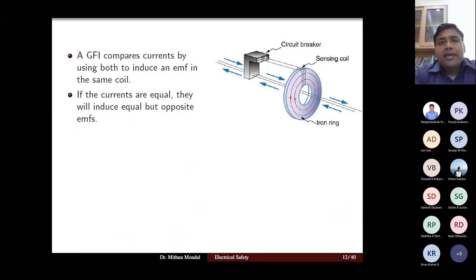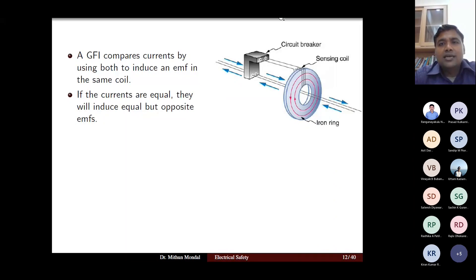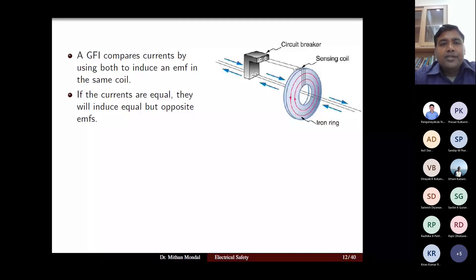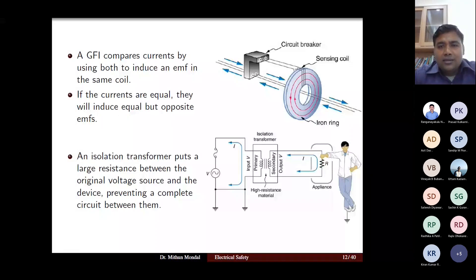The ground fault interrupter compares current in the live wire and neutral wire using the principle of induced EMF in the same coil with a sensing coil and iron frame. A magnetic field is induced in the iron ring. If currents are equal, they induce equal but opposite EMF, which cancel each other. Another important device is the isolation transformer, used especially in substations.